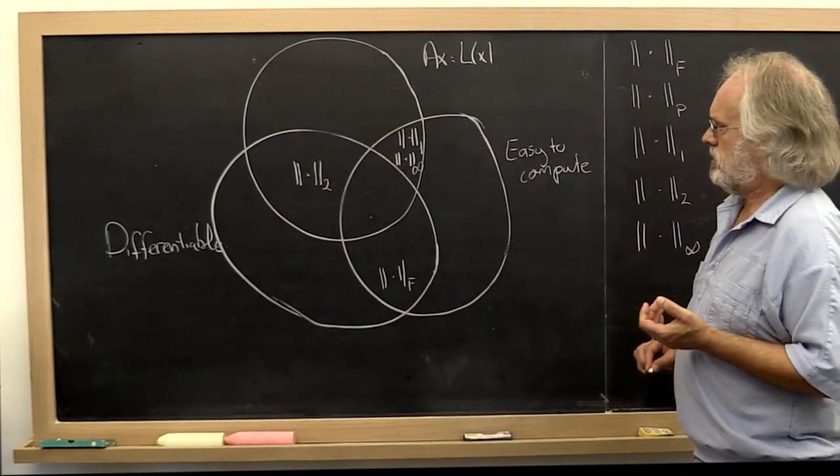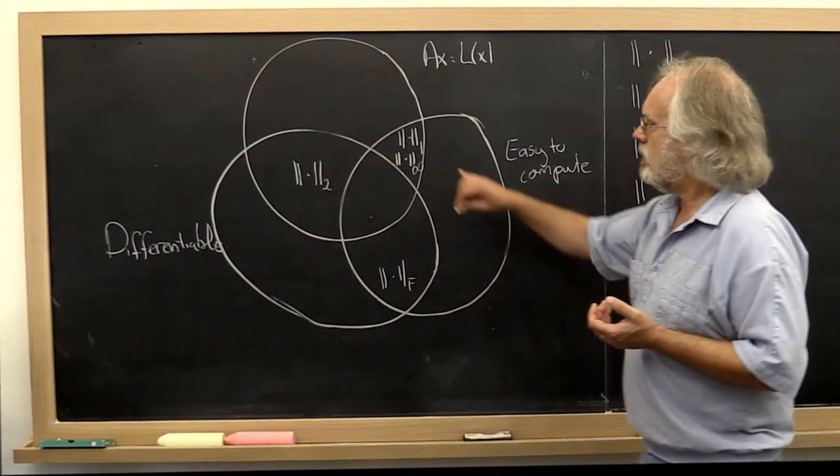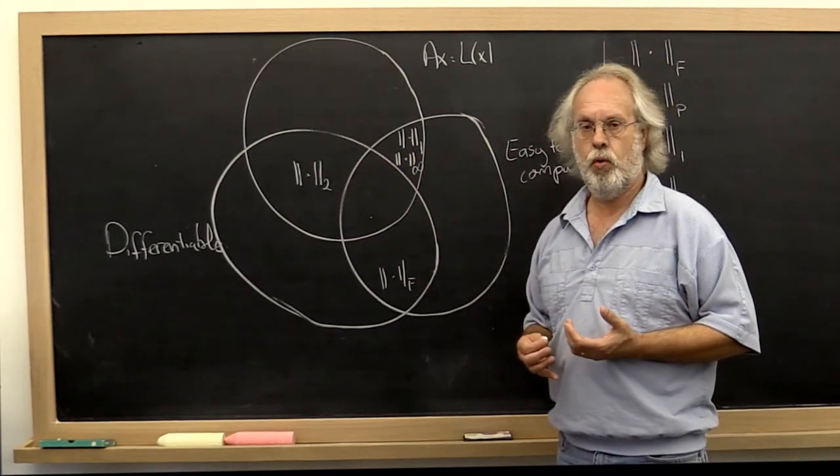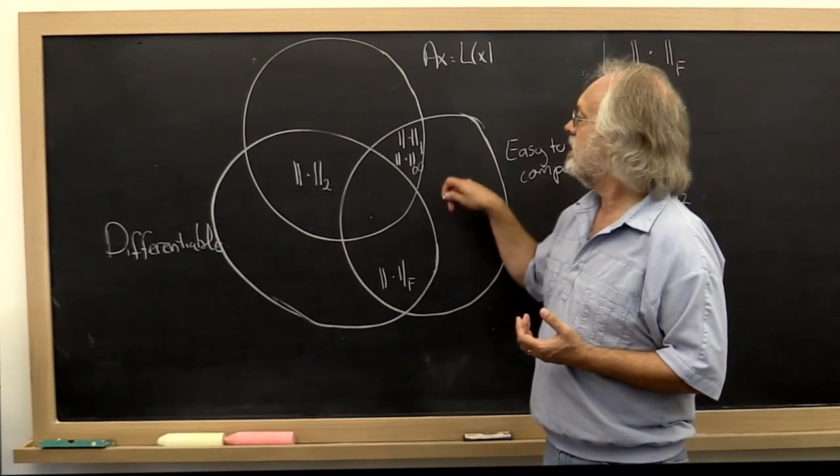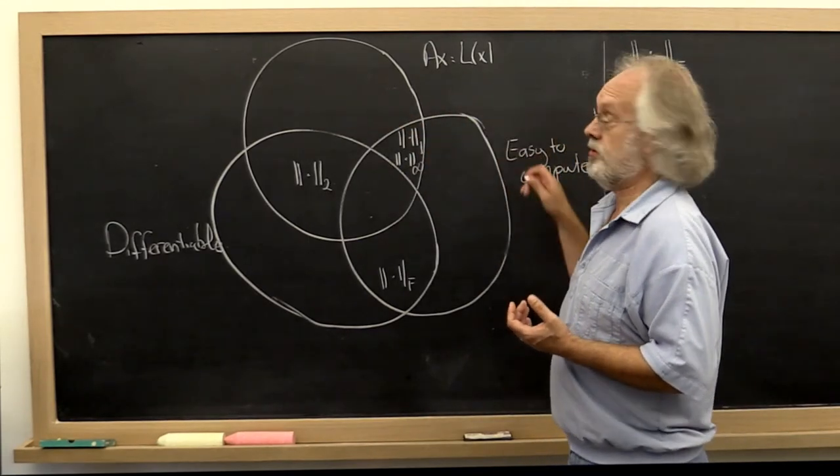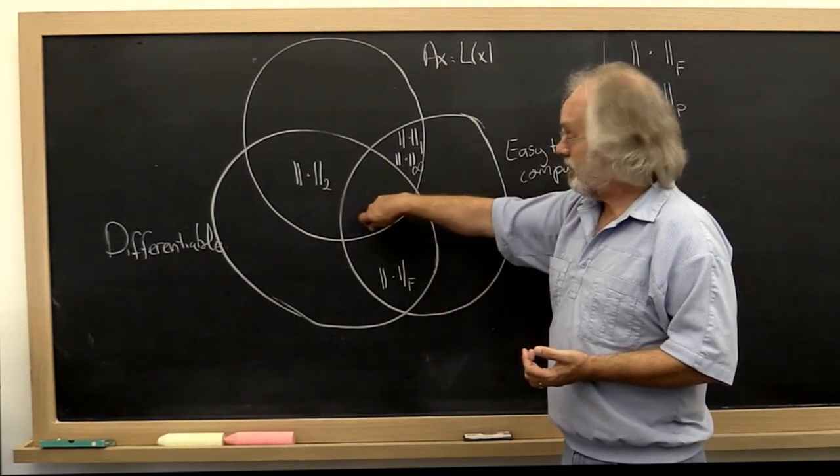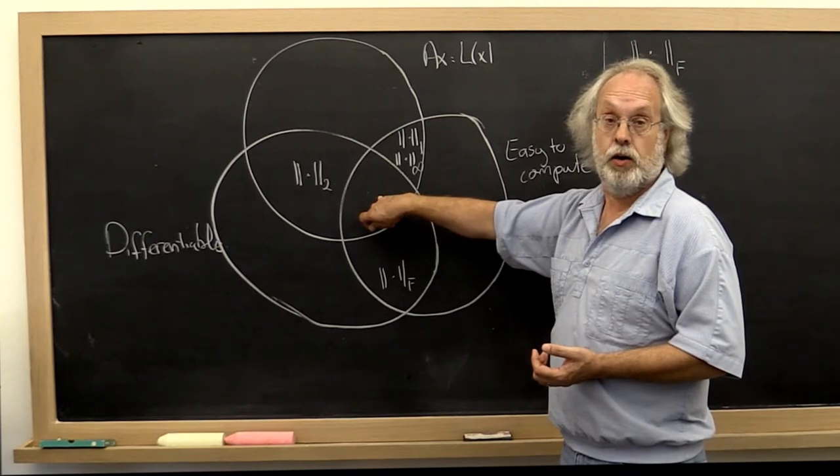And what do we notice? Every one of the norms that we have decided are important to us satisfy two out of the three conditions that we say are nice conditions to have about a norm. But none of them satisfy all.